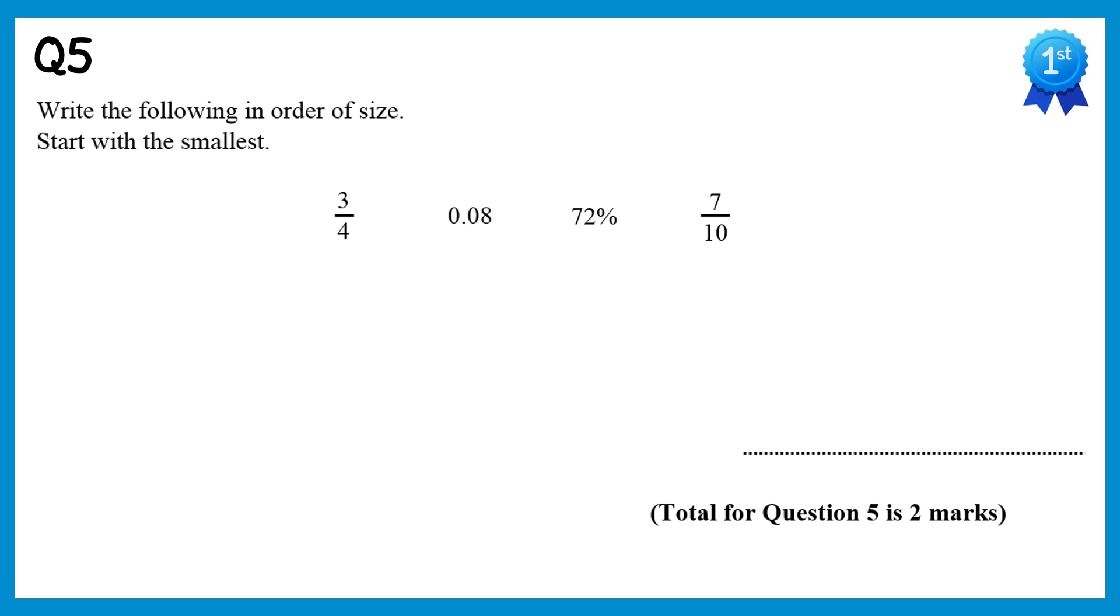To compare these numbers easily we'll write them all as decimals. So 3 quarters is 0.75, 0.08 is already a decimal, 72% is 0.72, and 7 tenths is 0.7. Now write all of the numbers on top of each other. Notice the number 0.7 at the bottom needs an extra digit, so we'll put a 0 in there. Now look down the first column and you'll see they're all 0s, so move on to the next column.